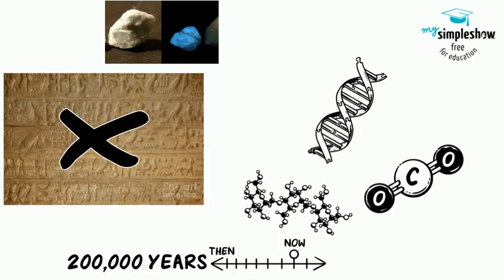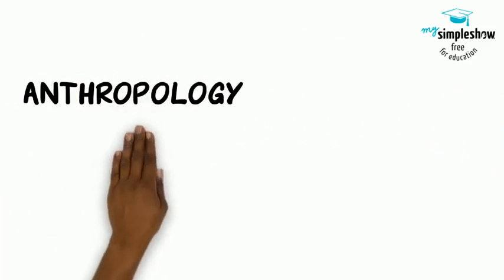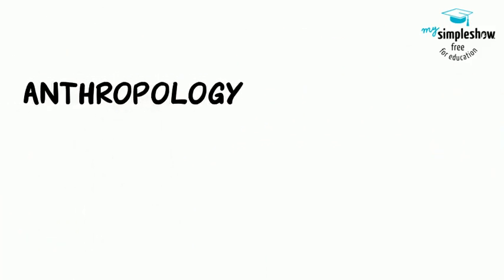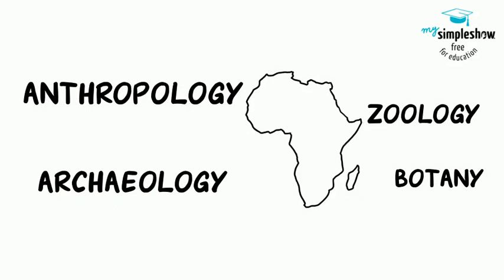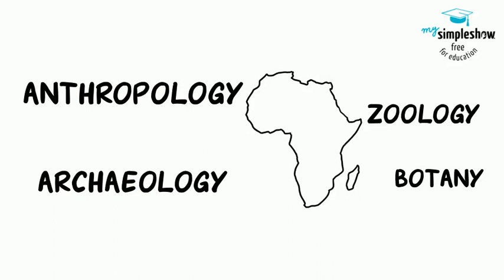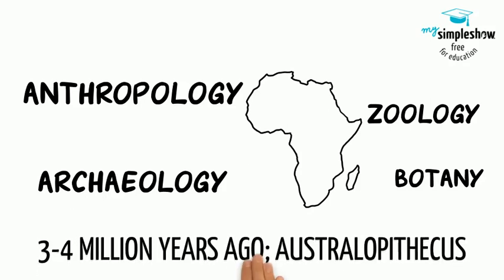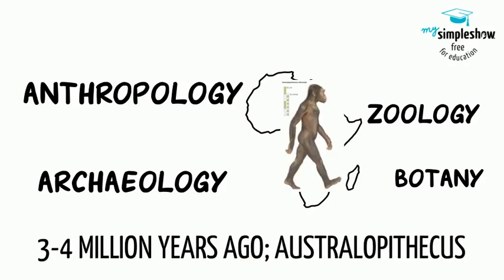Creation myths abound throughout the various faiths and philosophies of the world regarding how humans came to be. However, the scientific theories put forth by anthropologists, archaeologists, botanists, zoologists, and climatologists theorize that human life began in Africa about three to four million years ago as a hominid known as Australopithecine.